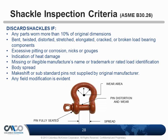Rejection criteria: look for any part worn more than 10% of the original dimension; any distortion, twisting, stretch, or elongation; cracked or broken components. If in doubt, take it out of service. Look for excessive pitting or corrosion, heat damage, illegible or missing markings, body spread — which makes threading the pin very difficult — makeshift or substandard pins, field modifications such as unauthorized welding, and missing cotter pins on bolt nut cotter type shackles.